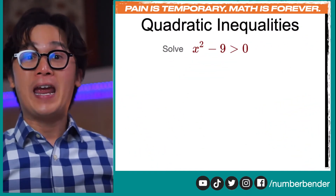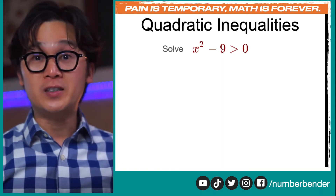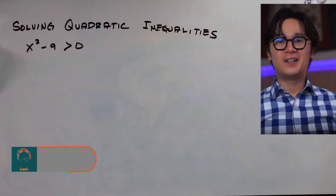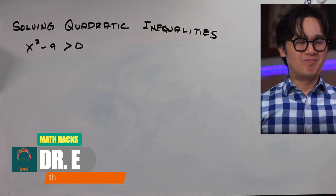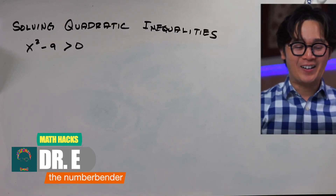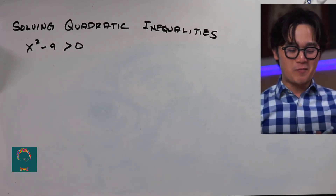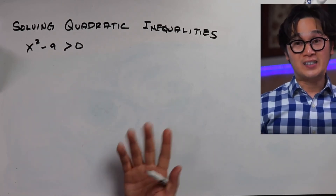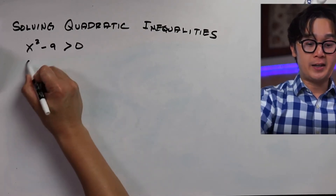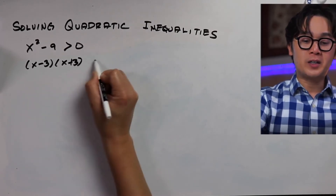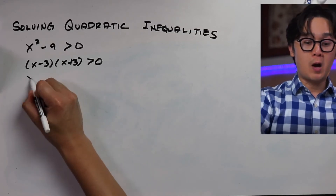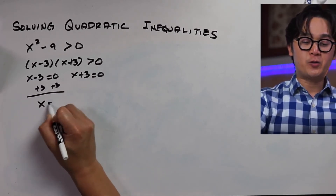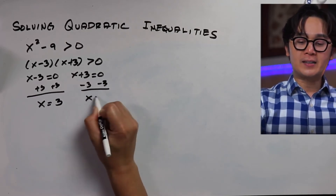Let's try another example: x squared minus 9 greater than 0. We'll solve this by hand. First, factor x squared minus 9 into x minus 3 times x plus 3, greater than 0. Using the zero product property, x minus 3 equals 0 gives x equals 3, and x plus 3 equals 0 gives x equals negative 3. These are our critical points.